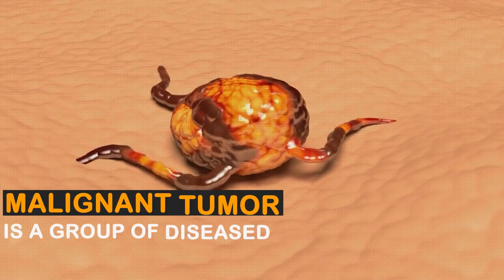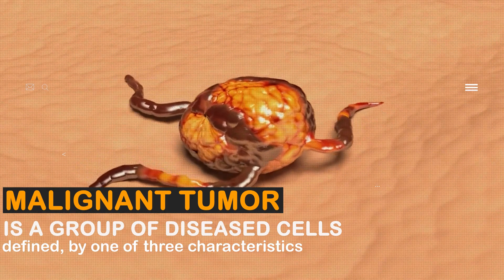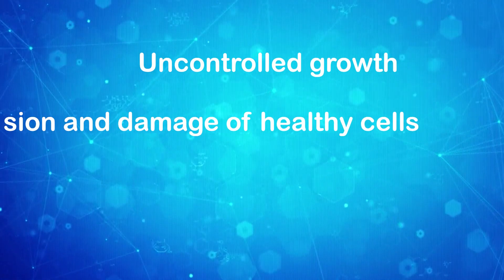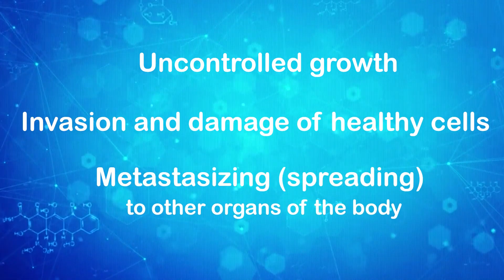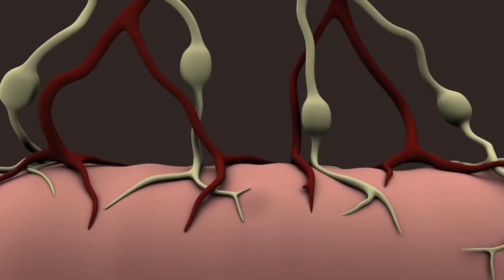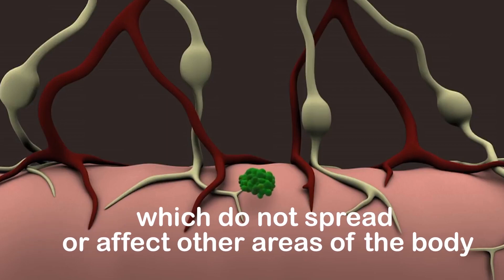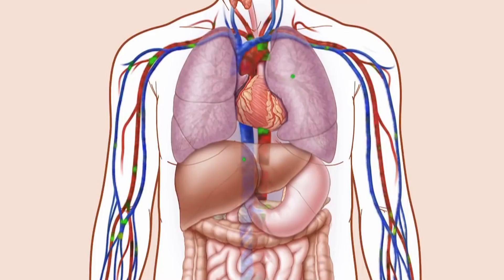A malignant tumor is a group of diseased cells defined by one of three characteristics: uncontrolled growth, invasion and damage of healthy cells, or metastasizing to other organs of the body. They differ from benign tumors, which do not spread or affect other areas of the body. The metabolism of cancer cells differs markedly from that of healthy cells.